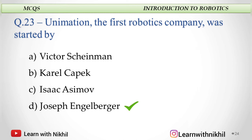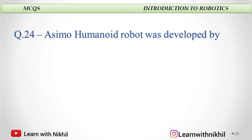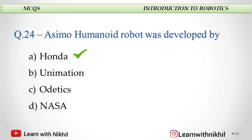Next question: ASIMO, the humanoid robot, was developed by — Honda, Unimation, Odetics, or NASA? ASIMO is the name of the humanoid robot and the answer is Honda.